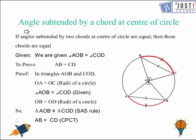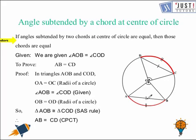Now let's proceed with the next property. It is actually the inverse of the first one. It says that if the angles subtended by two chords at the center are equal, then those chords are equal. In this case we have to prove that AB equals CD, given that angle AOB equals angle COD. Again we will prove the two triangles congruent.